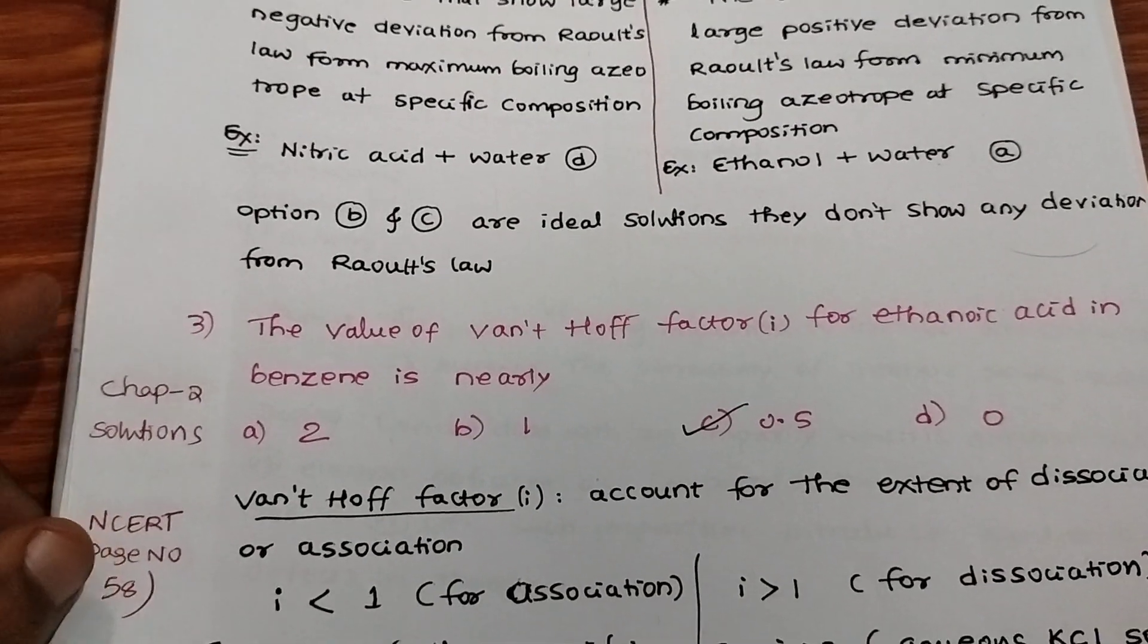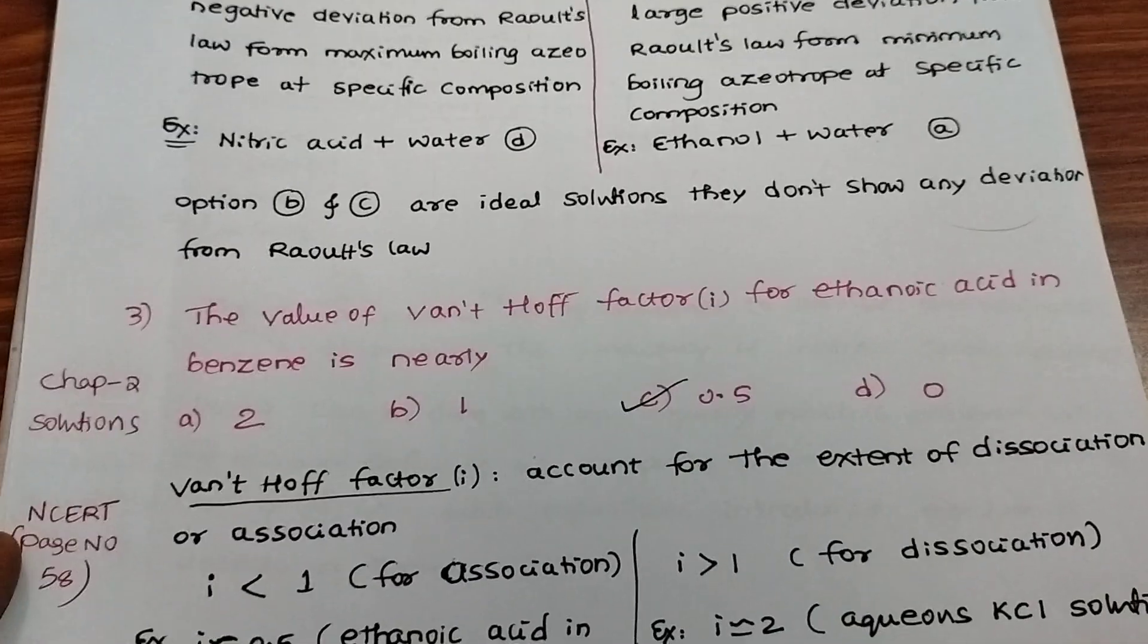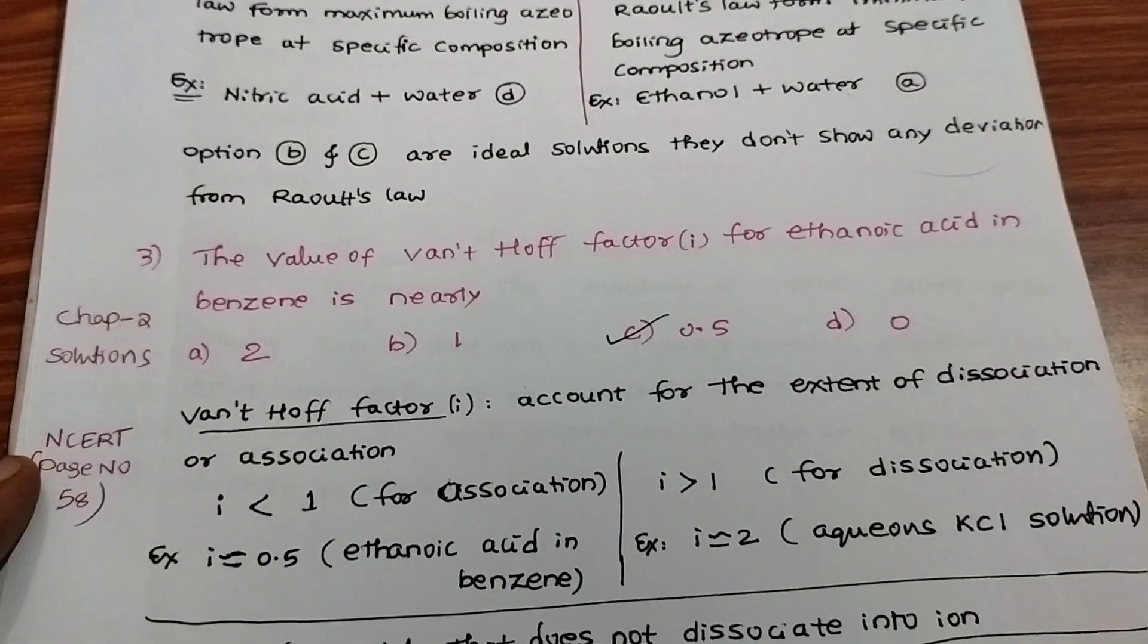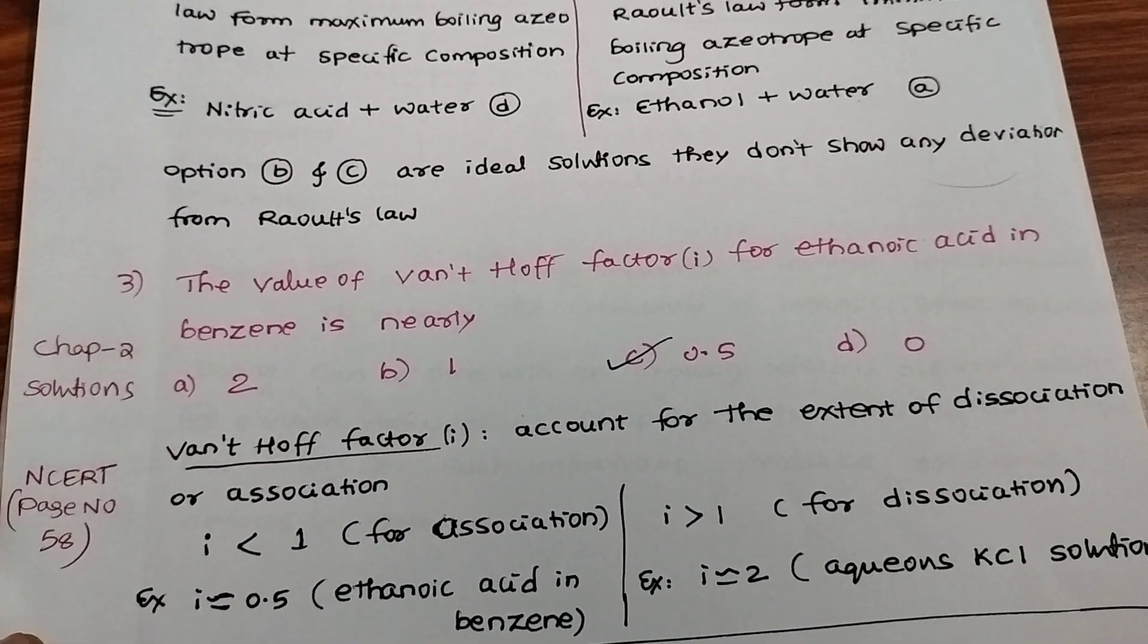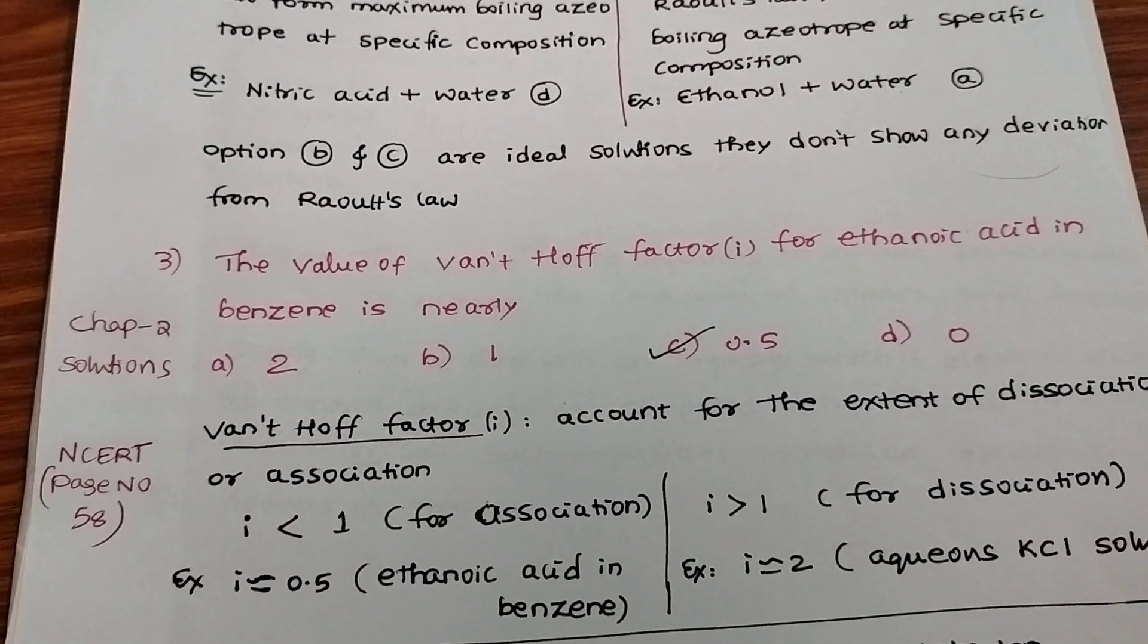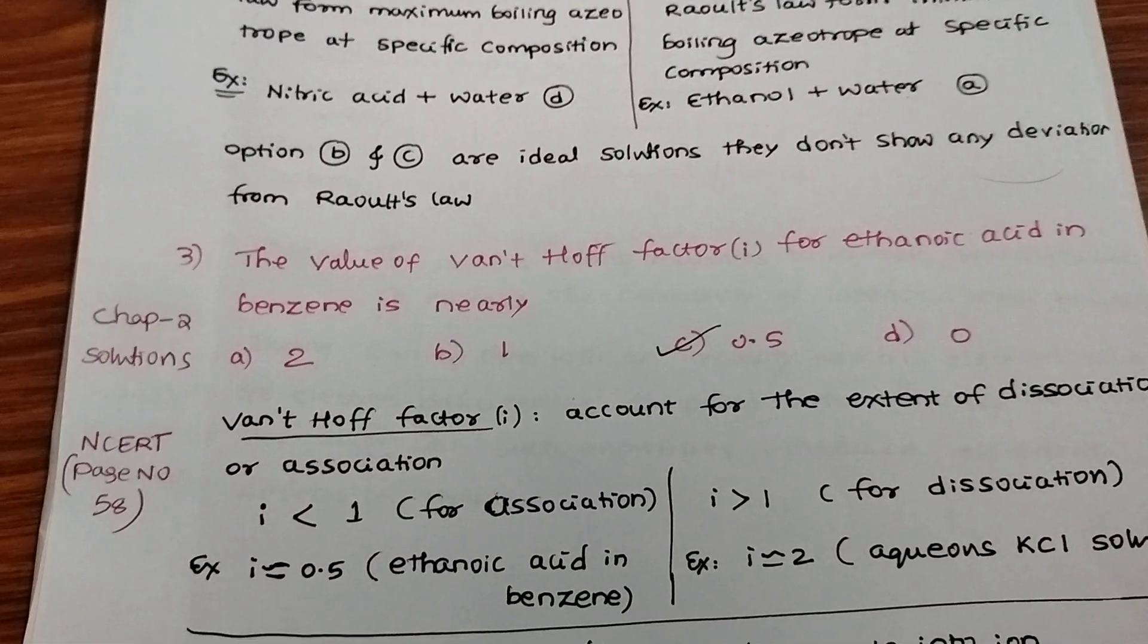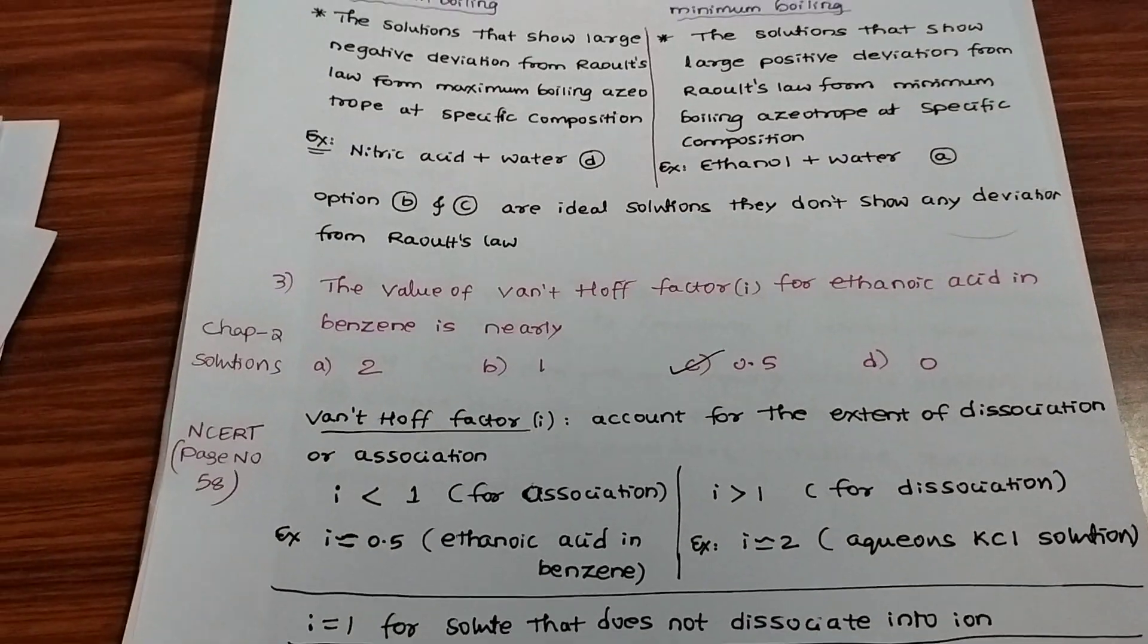Next, the value of Van't Hoff factor for ethanoic acid in benzene. The answer is 0.5. First, we need to know what is Van't Hoff factor. It accounts for extent of dissociation or association.